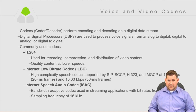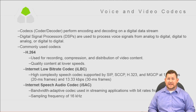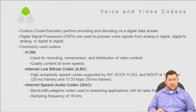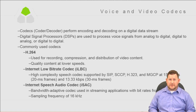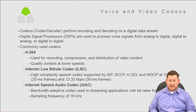iLBC wasn't really focused on for CCIE Voice but is coming into the spotlight for Collaboration. It's a high-complexity speech codec supported by SIP, Skinny, H.323, and MGCP. It operates at 15.2 kilobits per second with 20 millisecond frames, and 13.33 kilobits per second at 30 millisecond frame size. It's good to know the bandwidths at which these codecs can operate.